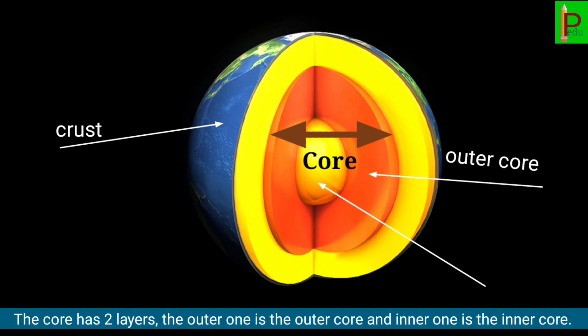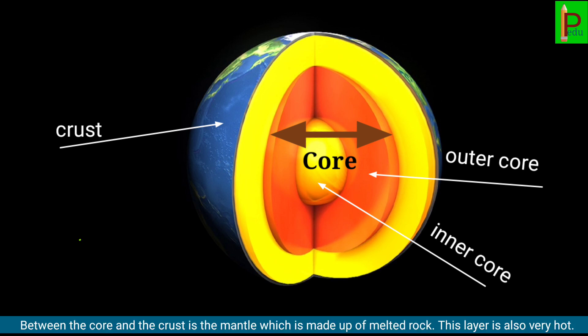The outer one is the outer core and the inner one is the inner core. Between the core and the crust is the mantle, which is made up of melted rock. This layer is also very hot.